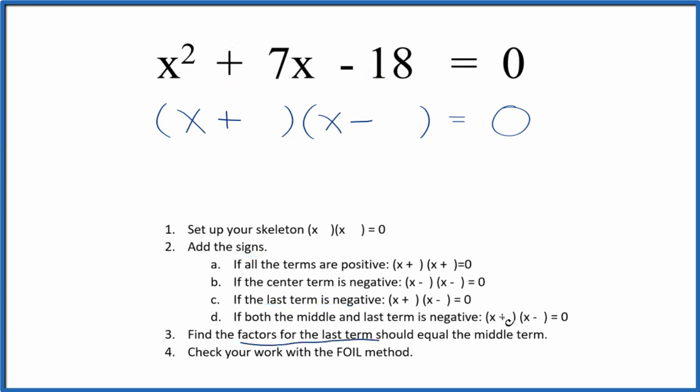Now we can figure out the factors of the last term. That's the 18, negative 18, and that should add up to the middle term. So the factors of 18, we have these three factors here, and really the only one that has a difference of 7 is that 2 and 9. So if I put a 9 here and a 2 here, 9 minus 2, that'll give me the 7.